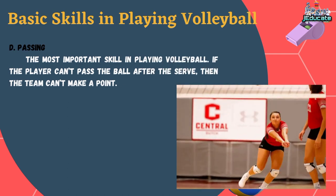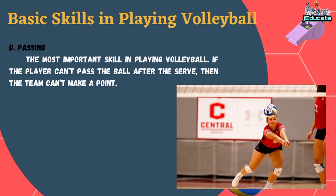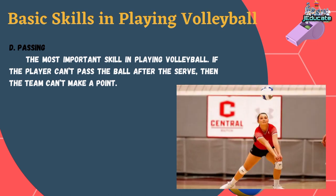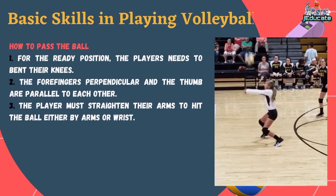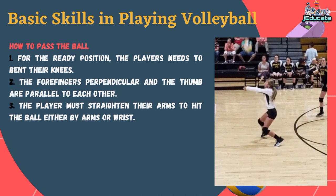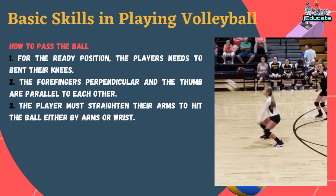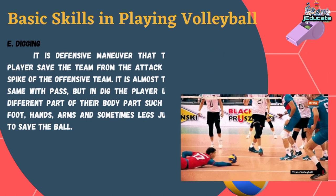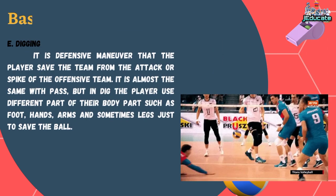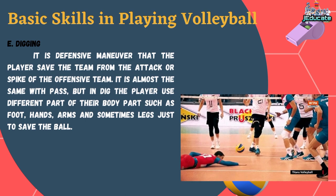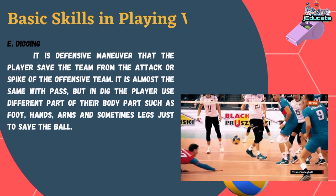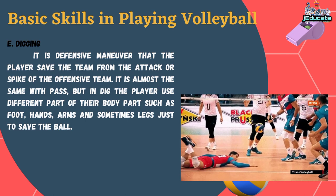Letter D, Passing — the most important skill in playing volleyball. If the player can't pass the ball after the serve, then the team can't make a point. How to pass the ball: Number 1, for the ready position, the player needs to bend their knees. Number 2, the forefingers are perpendicular and the thumbs are parallel to each other. Number 3, the player must straighten their arms to hit the ball either by arms or wrist. Letter E, Digging — it is a defensive maneuver that helps the player save the team from the attack or spike of the offensive team. It is almost the same as a pass, but in digging the player uses different body parts such as foot, hands, arms, and sometimes legs, just to save the ball.